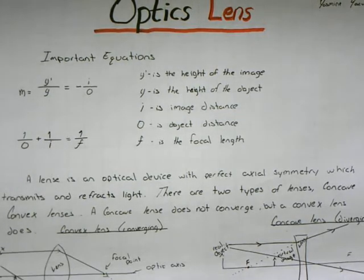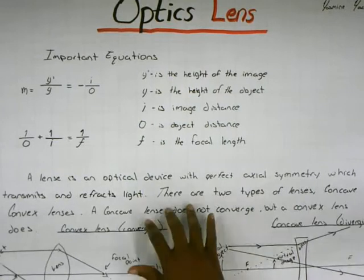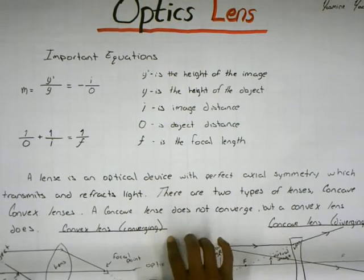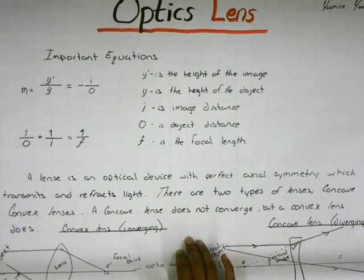Hello, I'm Yasmin on optics lens. A lens is an optical device of perfect axial symmetry which transmits and refracts light.